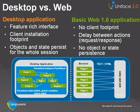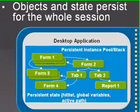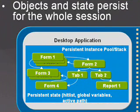While looking at the evolution of applications towards RIA, we should start with the move from desktop to web applications. Desktop applications provide a feature-rich interface, for example a large number of widgets to choose from. They do have a client installation footprint, which can be an overhead when installing the applications to a large site. A big advantage with desktop applications is that the objects and state persist for the whole session.